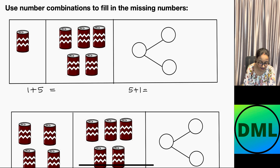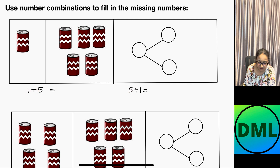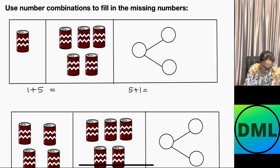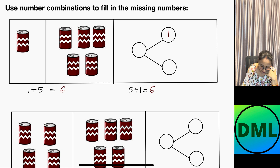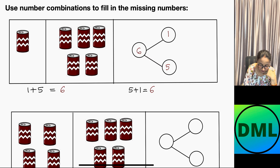Now let's see an example. Use number combinations to fill in the missing numbers. There is 1 can here and there are 1, 2, 3, 4, 5 cans there, so this will be 1 and this will be 5. We are adding them together — 1 plus 5 is the same as 5 plus 1. The bigger number is 5, and I need to add 1, so 5 plus 1 is 6. The answer is 6.